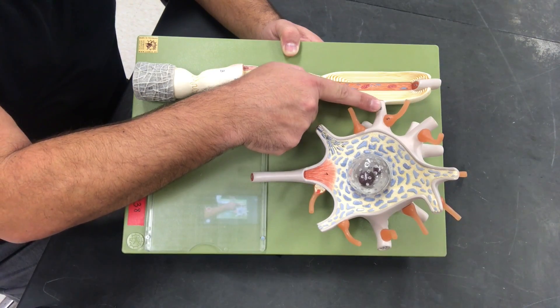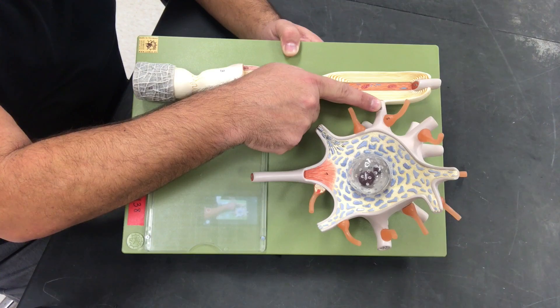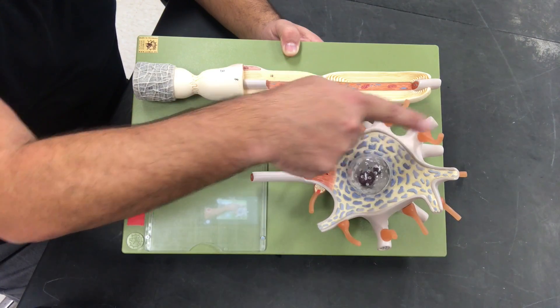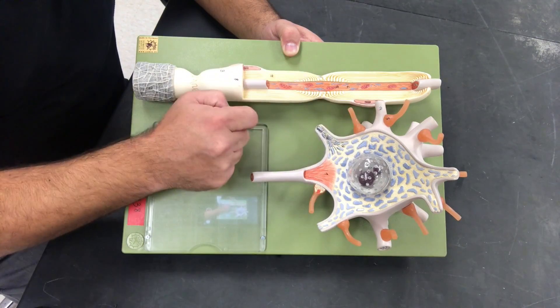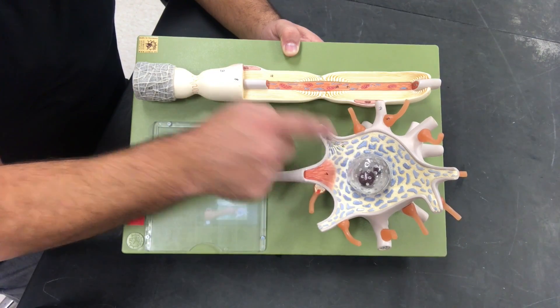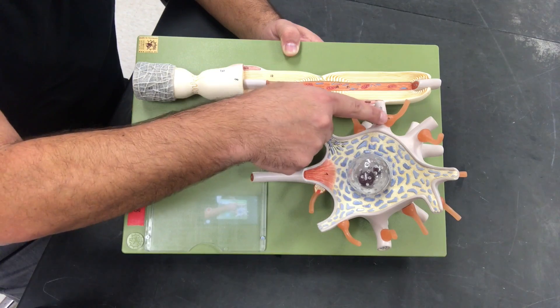And we have the first being axodendritic, so the axon terminals, synaptic end bulbs of another axon can come in touch and at the end at the dendrite of this multipolar neuron, so it's axodendritic.